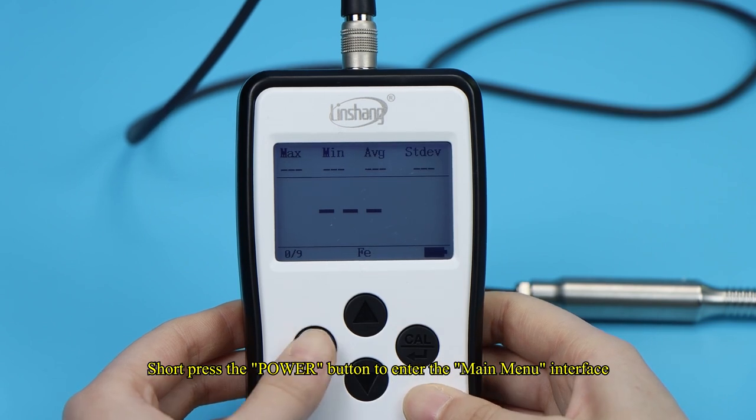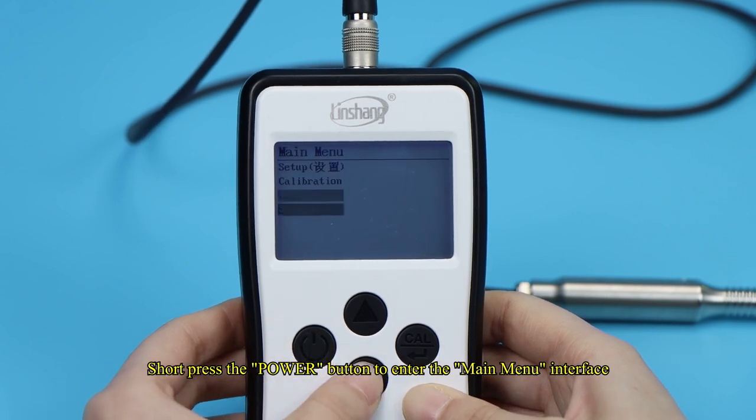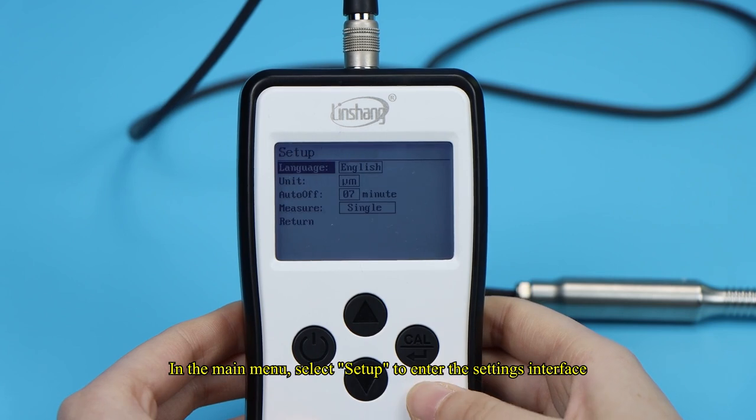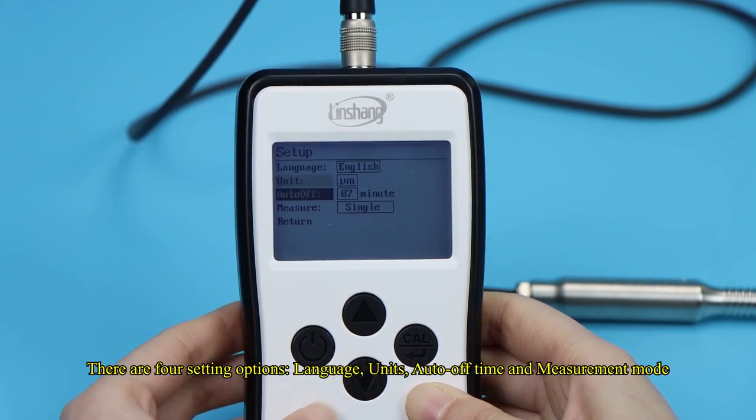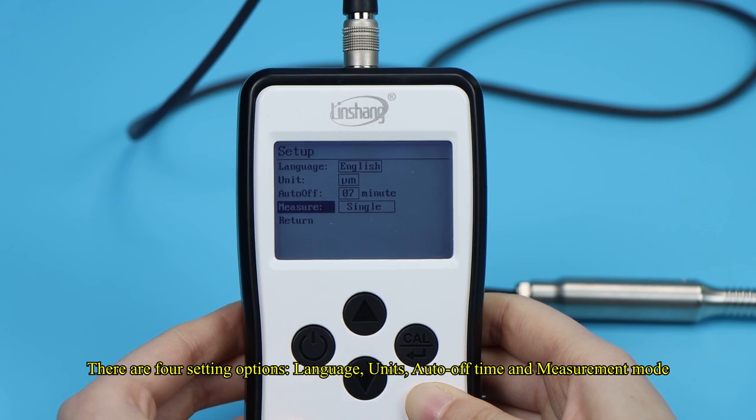Short press the power button to enter the main menu interface. In the main menu, select Setup to enter the settings interface. There are four setting options: language, units, auto-off time, and measurement mode.